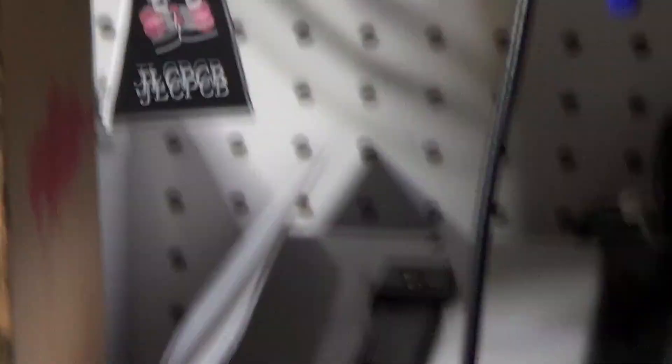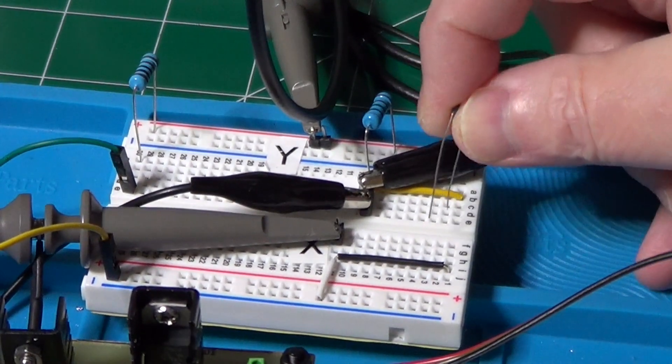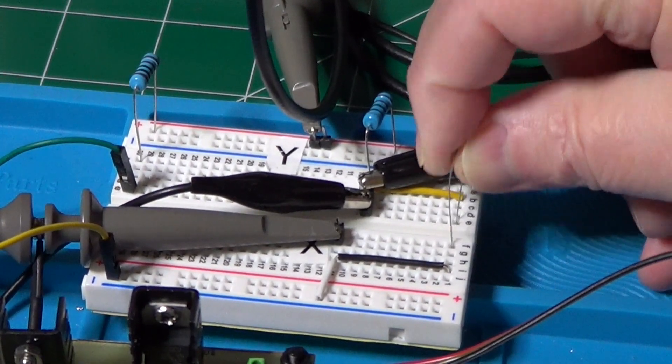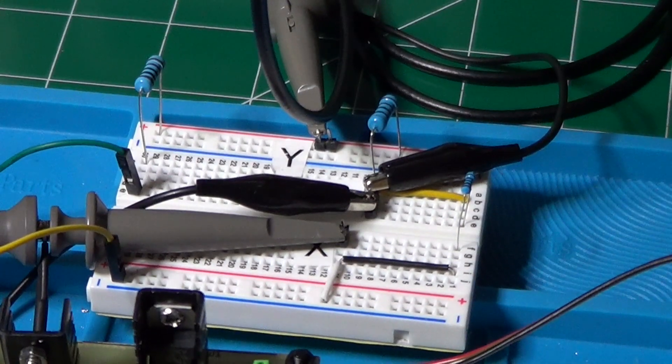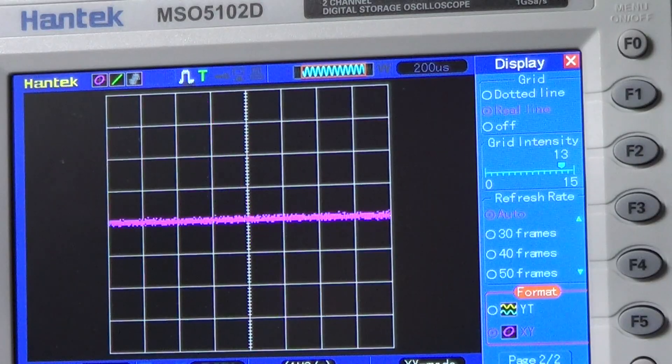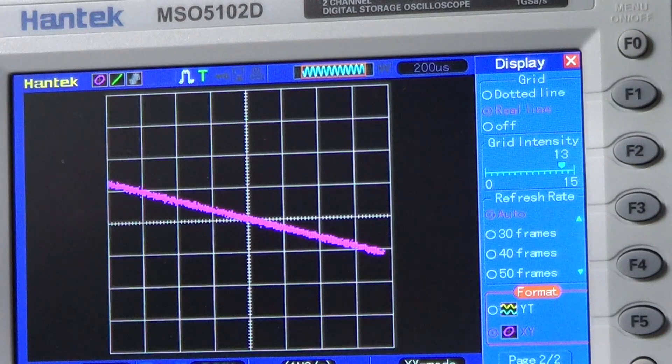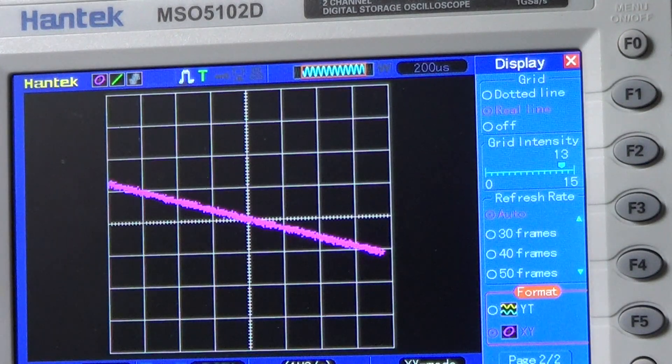Let's now put a 1K resistor at the input. And this is the graphic that we obtained. Let's now try with a bigger resistor. And the line is now less inclined on the horizontal.